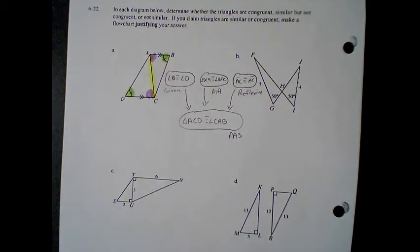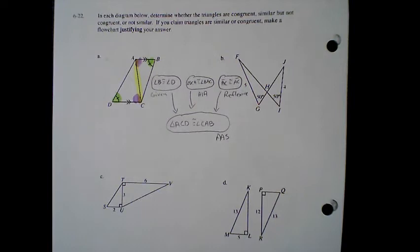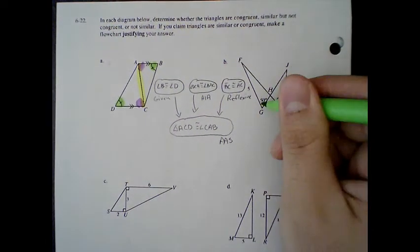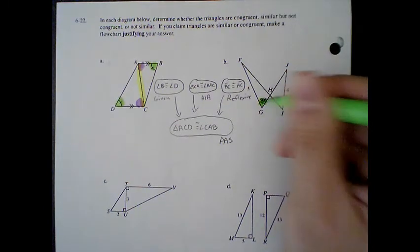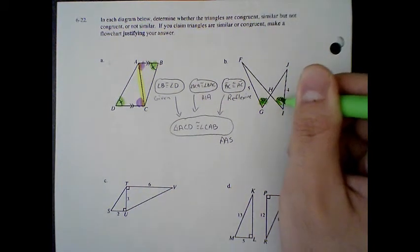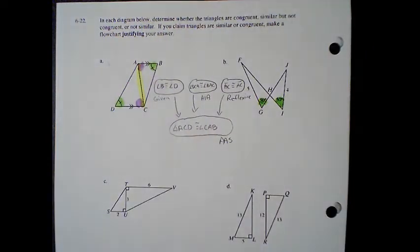Let's move on to letter B. So let's start with what we know. I know that this is 50 degrees because this is given to me, and I know that this is 50 degrees. So do you think these triangles are congruent, similar but not congruent, or not similar? For this triangle, it is going to be similar but not congruent.